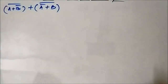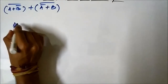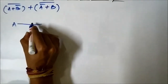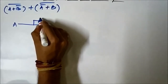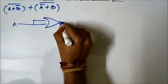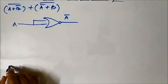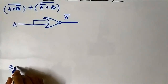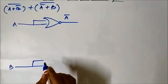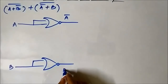First, we will use NOR gates. We have the signal A which is uncomplemented. We will give it as a shorted input to a NOR gate to get A complement. Similarly, we will give signal B as a shorted input to another NOR gate, which will give us B complement.